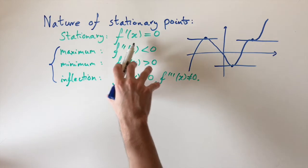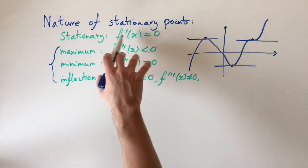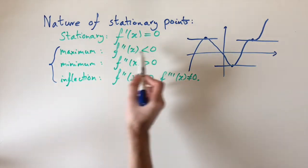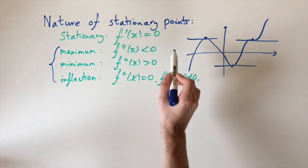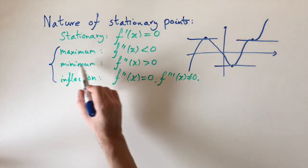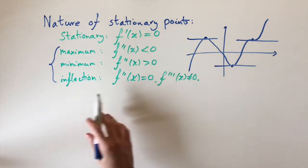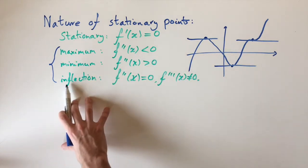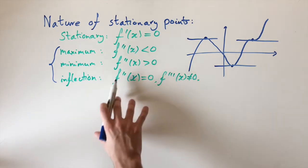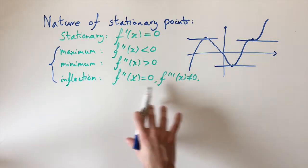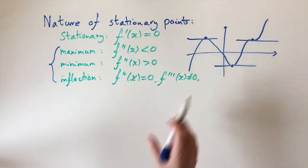In all of these cases we need them to be turning points, so firstly we need the derivative to be zero. But if we want a maximum, we need the second derivative to be negative. If we want a minimum, we want the second derivative to be positive. But for a point of inflection, it's the other case where the second derivative is zero, but we also need this extra condition where the third derivative is non-zero.